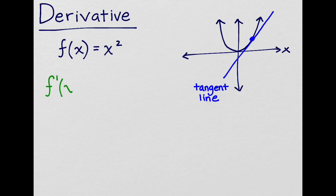The derivative is defined using a limit. The formula for finding the derivative of a function f of x is f prime of x equals the limit as h approaches 0 of f of x plus h minus f of x divided by h.